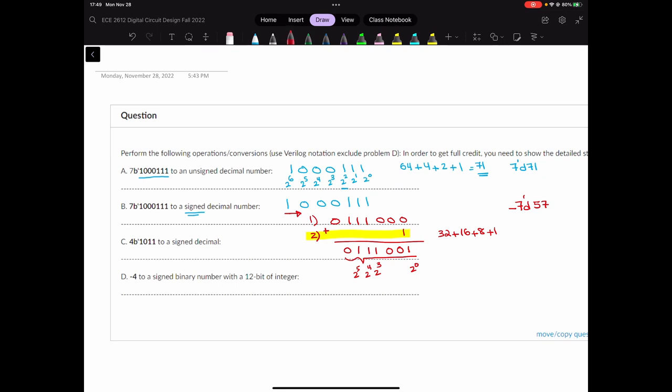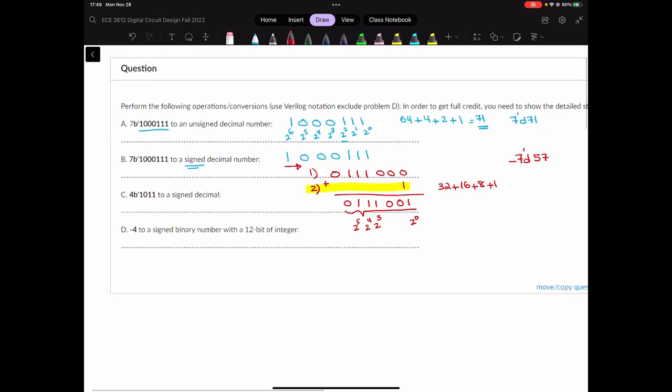Now we want to go from, I mean part C is 1-0-0-1. And we want to convert it to a signed decimal. Again, the most significant bit is 1. So I'm sure that I have a negative number. How many bits I have? 4. What am I converting to? Decimal.